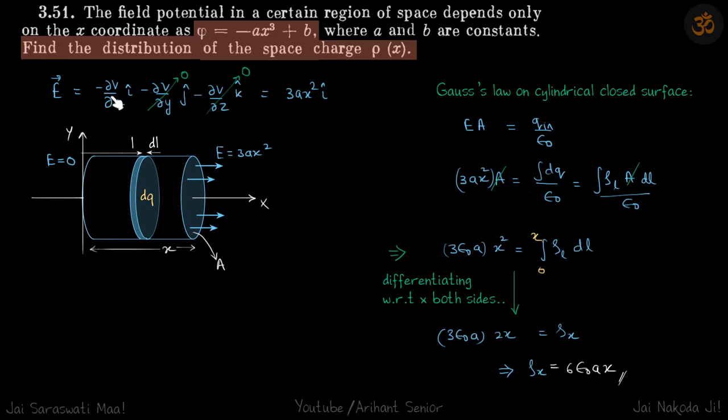And minus ∂V/∂x becomes 3ax² î, so this is our electric field in the region. It's uniform—no, sorry, not uniform—but it's unidirectional; everywhere it's in the direction of î.